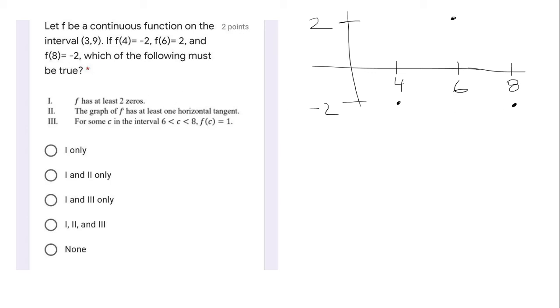So which of the following must be true? f has at least two zeros. Well, let's see. Because the function is continuous in the open interval, I cannot lift up my pen when I draw this. So I don't know what it looks like, but I need to connect point A with point B, and then point B to point C. That's what it means to be continuous.